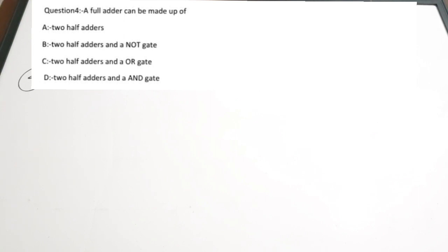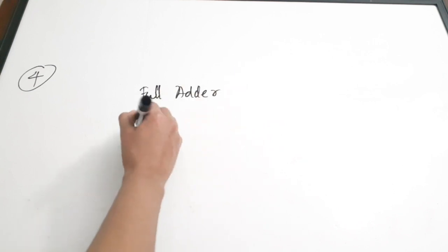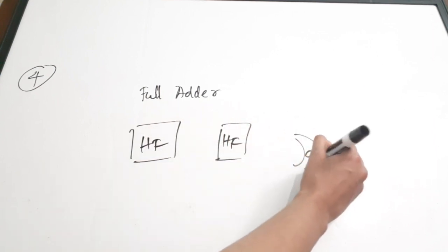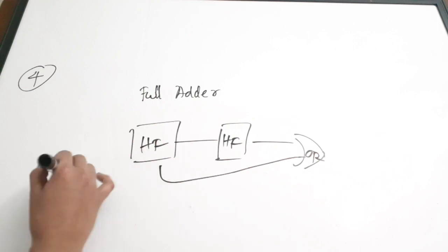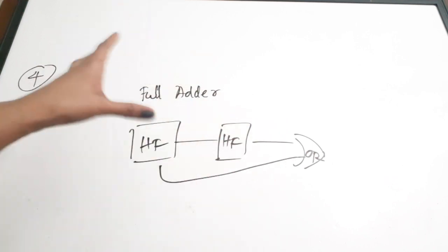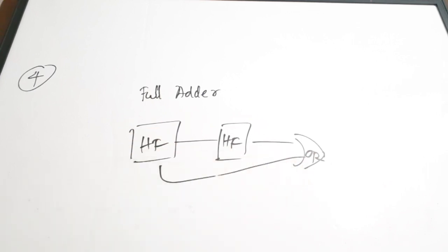Fourth question: a full adder can be made up of dash. Options: A) two half adders, B) two half adders and a NOT gate, C) two half adders and an OR gate, D) two half adders and an AND gate. You can make a full adder with two half adders and an OR gate. Correct answer is option C.